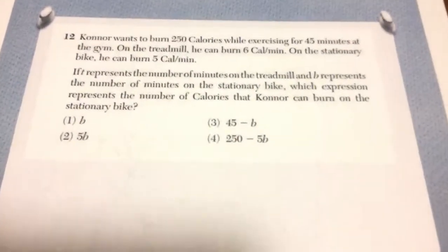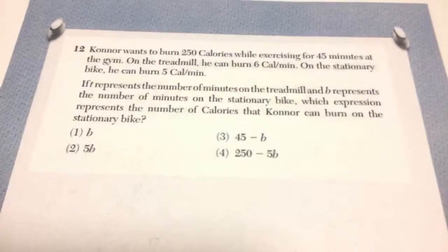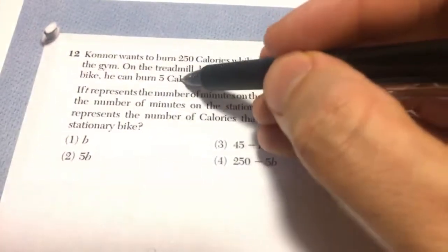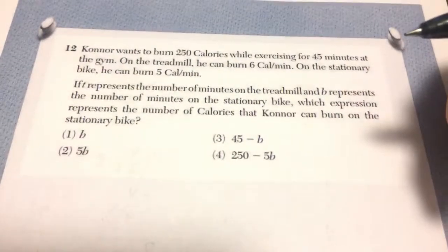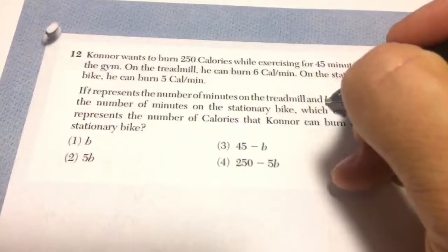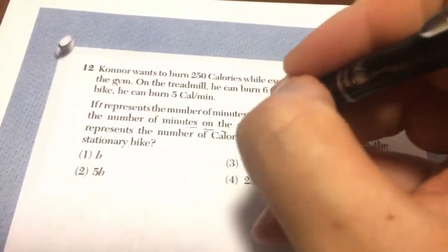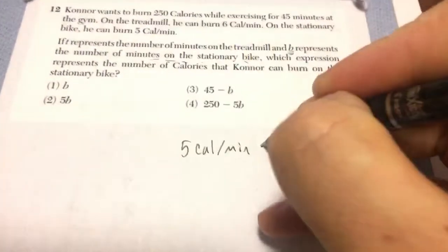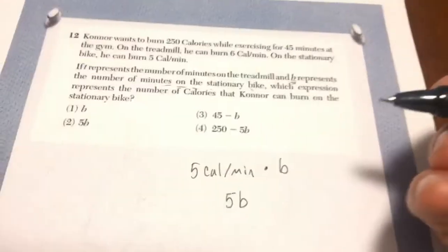Number 12 says which expression represents the number of calories that Connor can burn on the stationary bike? Well, on the stationary bike he's burning 5 calories per minute. If b represents the number of minutes on the stationary bike, we're doing 5 calories per minute times the number of minutes. So we're going to say 5b.